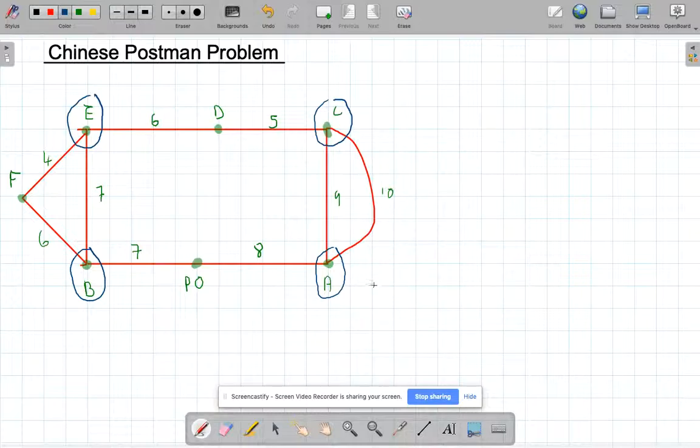But the Chinese Postman problem basically wants me to pair up A and C. And if I pair up A and C, it wants me to pair up B and E. Now, if I go along A and C, that's nine. That's the shortest one anyway. And B to E is seven. And that gives me a total of 16.